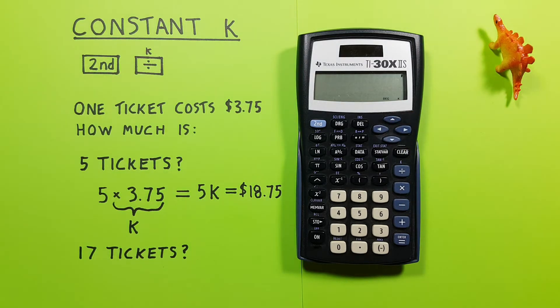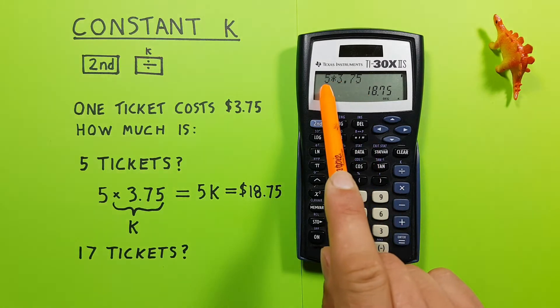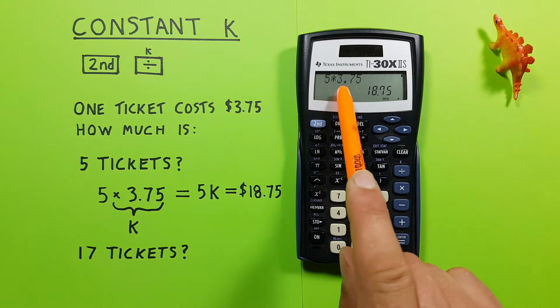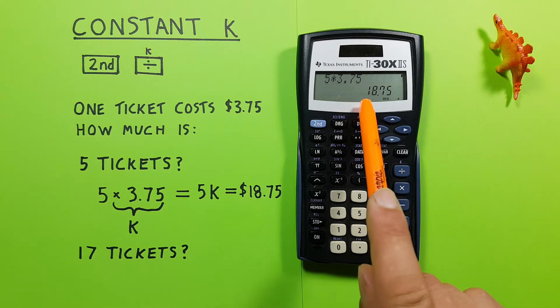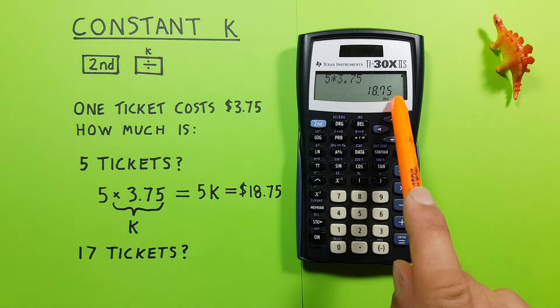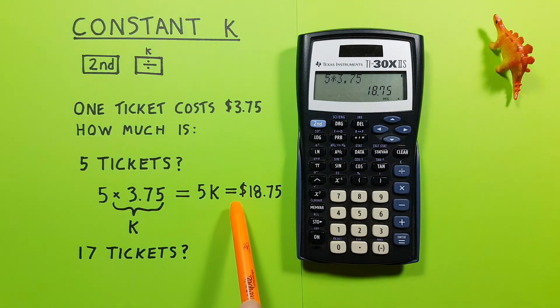And now to see how much the ticket packages cost, for say, five tickets, we just press five, and then we can press equals, and our K is automatically applied there. So five times 3.75 equals 18.75. So our five tickets cost $18.75.